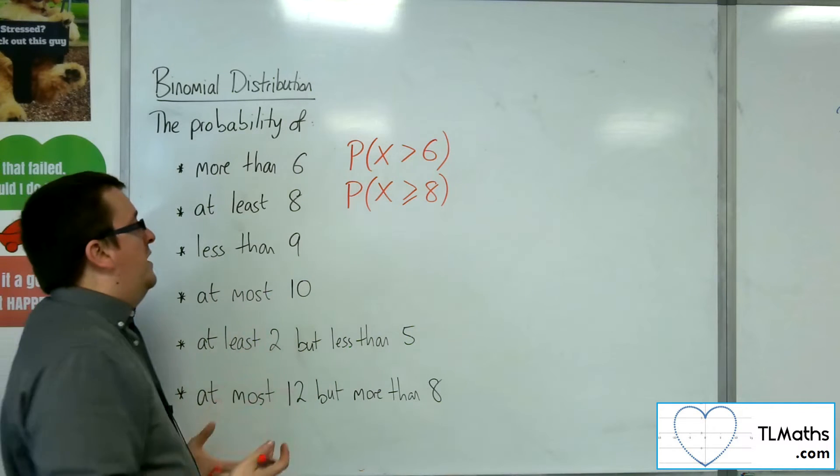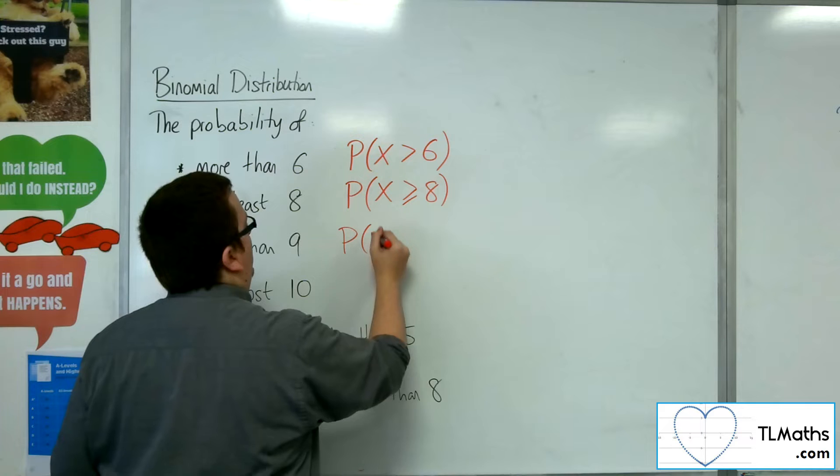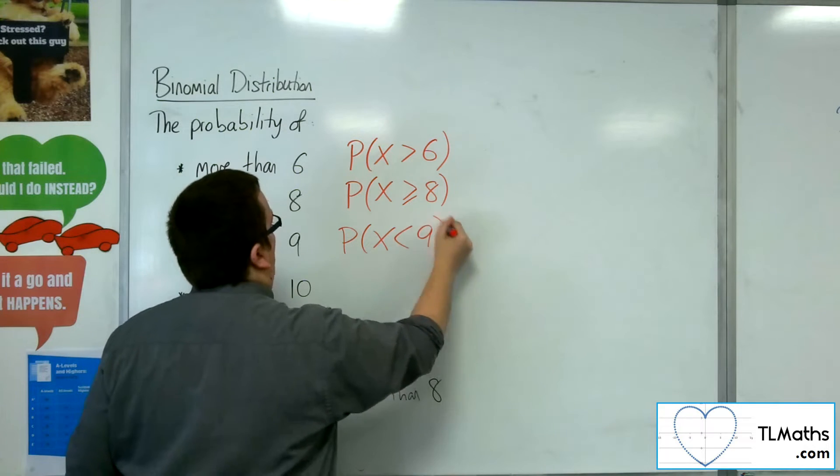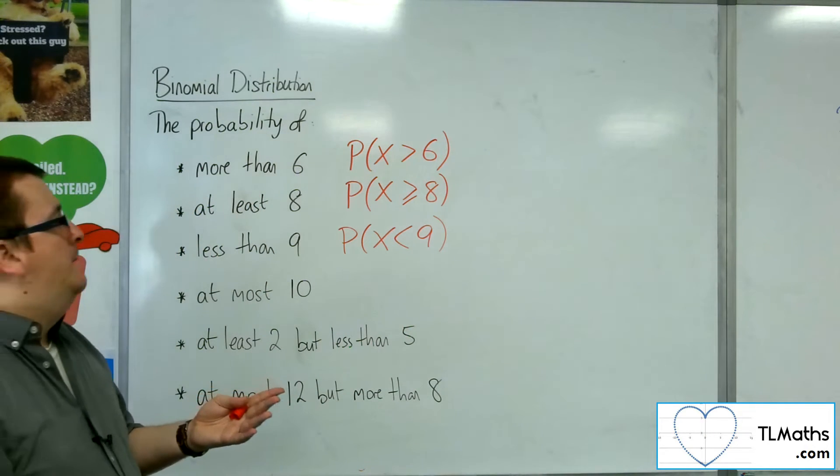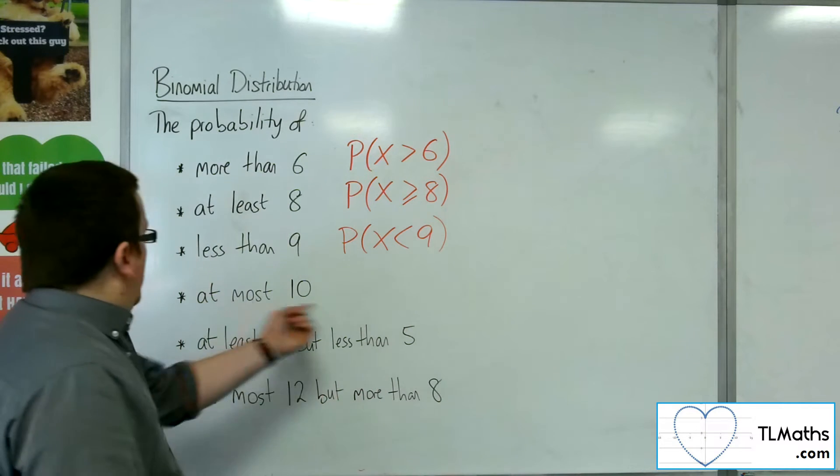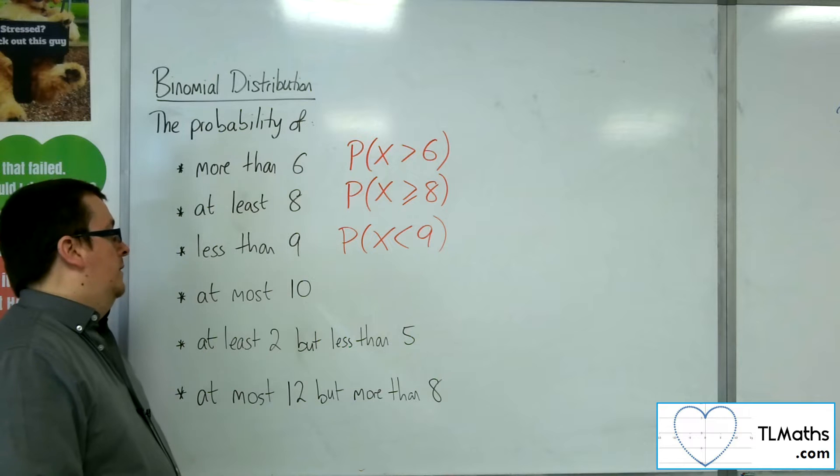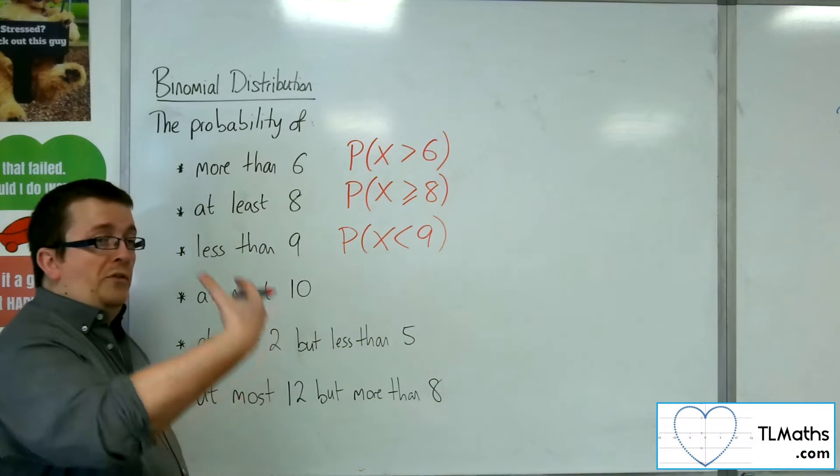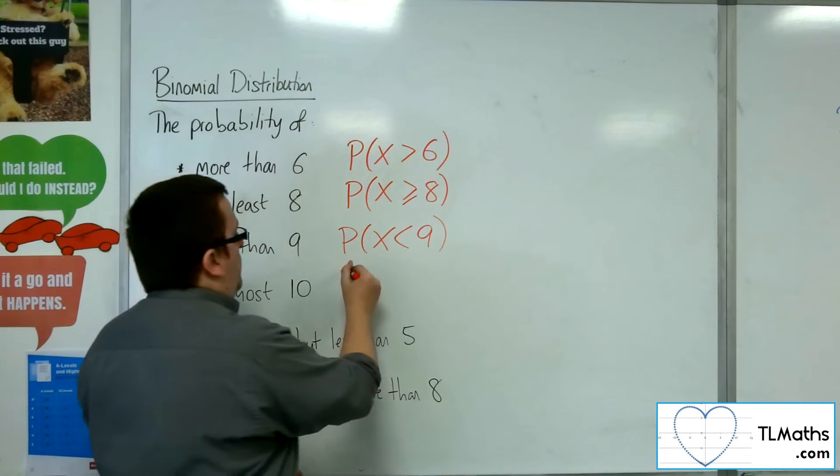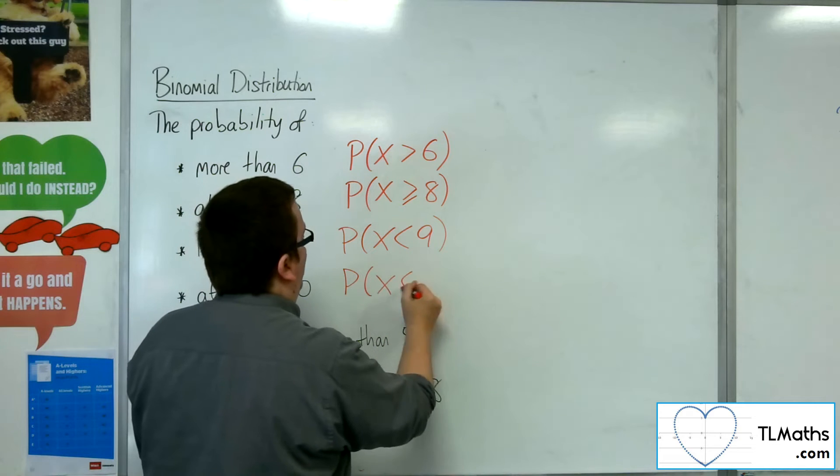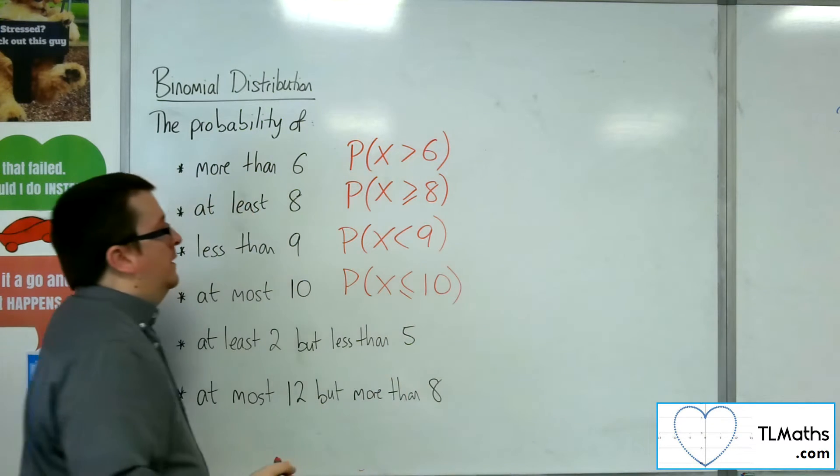Less than, well that's another obvious one. So the probability of X being less than 9. I want less than 9 people to appear at the party. And at most 10, I want at most 10 people to be at the party. So at most 10 puts a limit at 10. So I want less than or equal to 10.